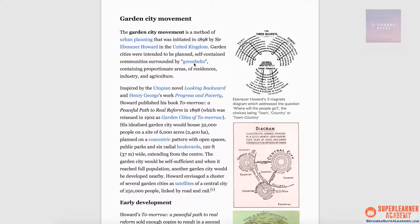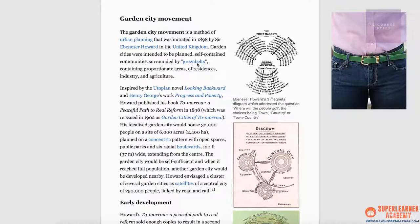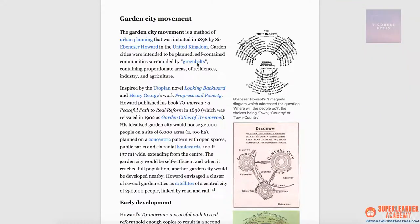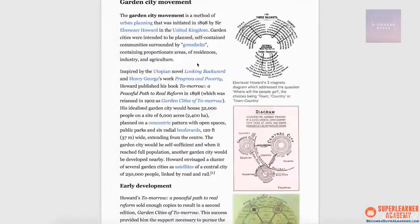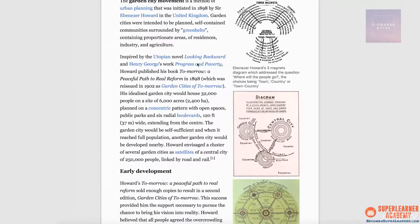Next, I see 'green belts.' That's pretty easy — I come up with a green leather belt, and particularly I see it on a pair of blue jeans. A green belt is a good marker in general. Let's move on to the next paragraph.